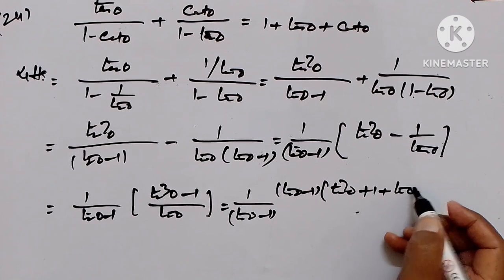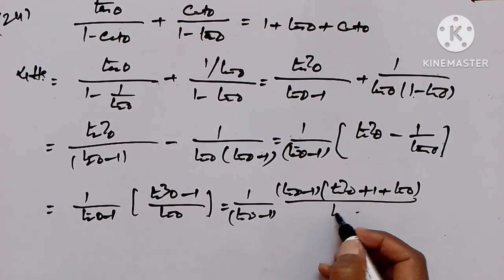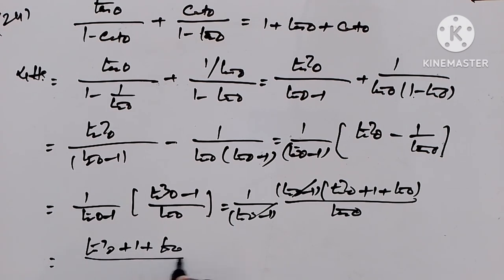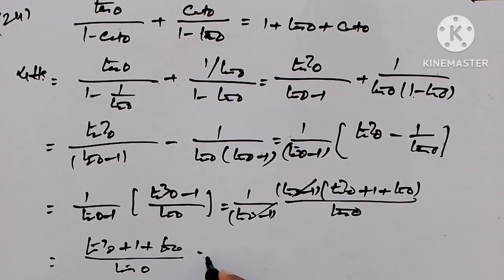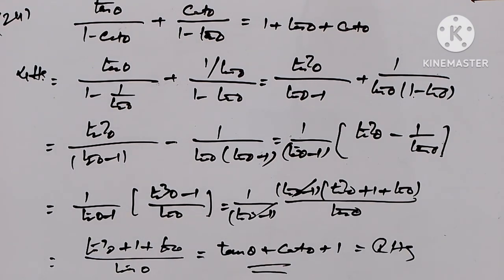Distributing further, (tan θ - 1) cancels, and what remains: this gives tan θ plus 1 plus tan θ upon (tan θ + 1), and dividing out we get tan θ plus cot θ plus 1, which equals the right-hand side. Hence proved. So that was question number 24.